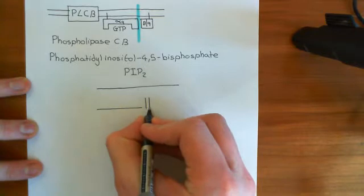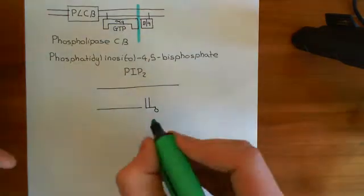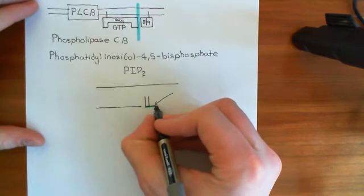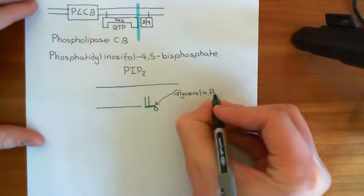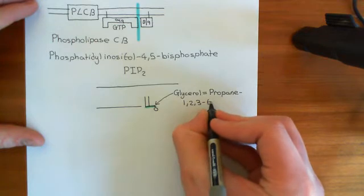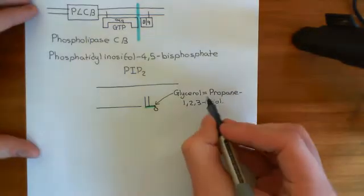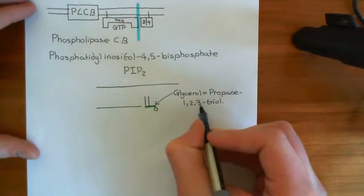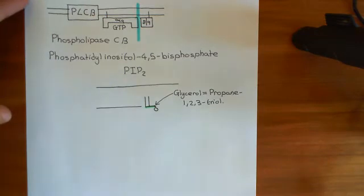I want to show you a cartoon of the structure of this molecule to convince you that it is just a modified version of a normal phospholipid. So let's look at the structure of a normal phospholipid and then modify it into phosphatidyl inositol 4,5-bisphosphate. At the centre is a horizontal line — coloured in green — representing the glycerol molecule, whose chemist's name is propane-1,2,3-triol: a three-carbon molecule with alcohol groups coming off the first, second, and third carbon.